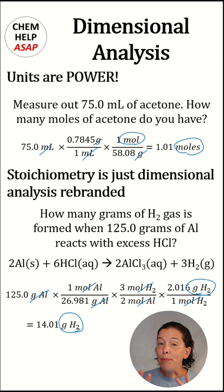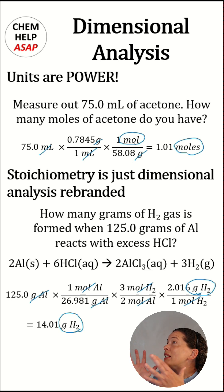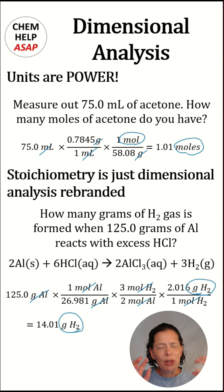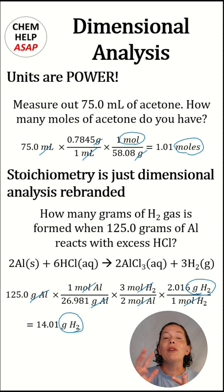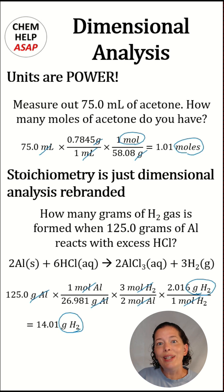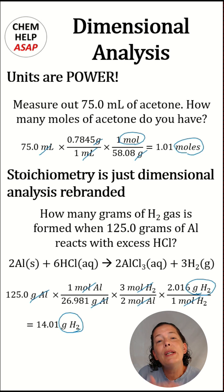With stoichiometry in particular, it's not just about grams or milliliters or moles — it's about specifying moles of what, or grams of what. In this particular problem, we're converting between aluminum and hydrogen, so you want to make sure you specify: I'm talking about grams of aluminum here, or grams of hydrogen here. If you've built those good habits of writing the units, it's going to carry over into stoichiometry. You're not going to get those problems wrong just because you flipped the mole ratio.